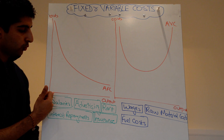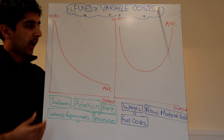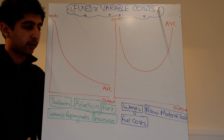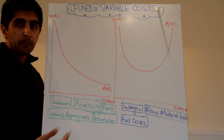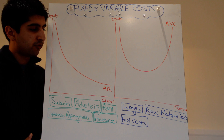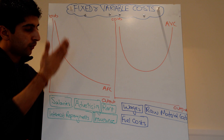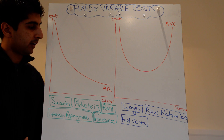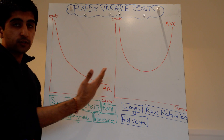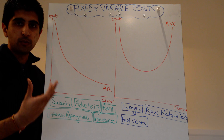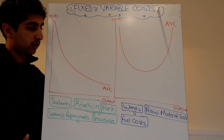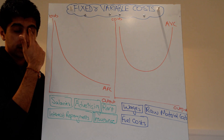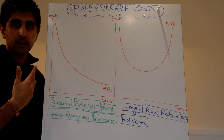It makes logical sense. If you're producing one unit and your total fixed costs are £100,000, your average is going to be £100,000. But if you're producing 100 units, your average fixed costs will fall — £100,000 divided by 100 is a much lower number. So your average fixed costs fall as you produce more, because you spread your fixed costs over a larger range of output, which explains the shape of the curve — as you produce more, the curve gets flatter.